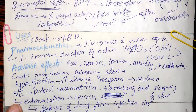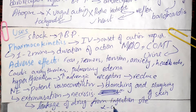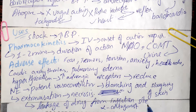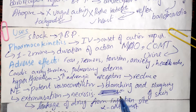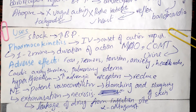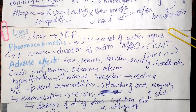Impaired circulation caused by norepinephrine may be treated with an alpha receptor antagonist. Administering an alpha receptor antagonist blocks the alpha receptors being stimulated by norepinephrine, producing the opposite vasodilatory effect and thereby treating the impaired circulation caused by norepinephrine.